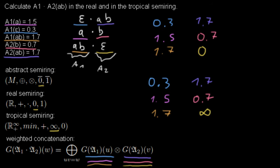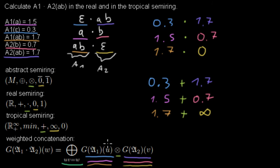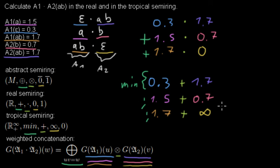Now let's look at what calculation we have to do. Each of the weights we have to combine with the multiplication. The multiplication in the real semi-ring is standard multiplication, so we multiply those weights. For the tropical semi-ring, we do addition — we add those up. Then we want to sum over all possible weights we have calculated. The sum for the real semi-ring is addition, so I add all of those weights up. For the tropical semi-ring it's a minimum, so I retrieve the minimum of all those numbers.